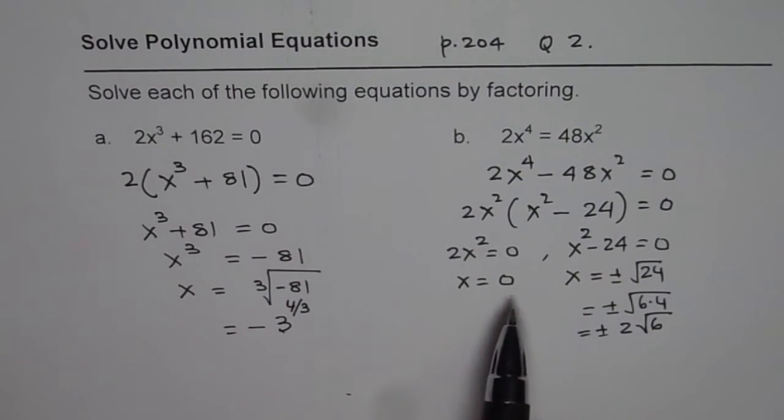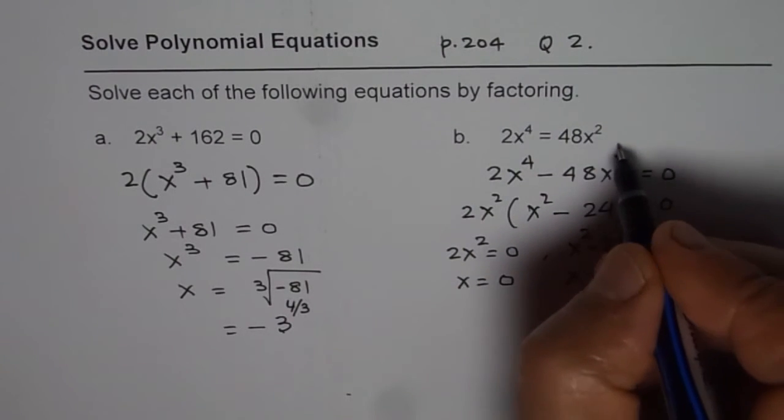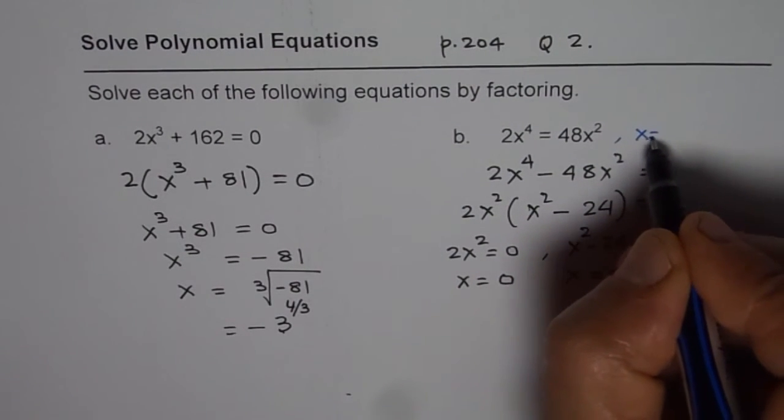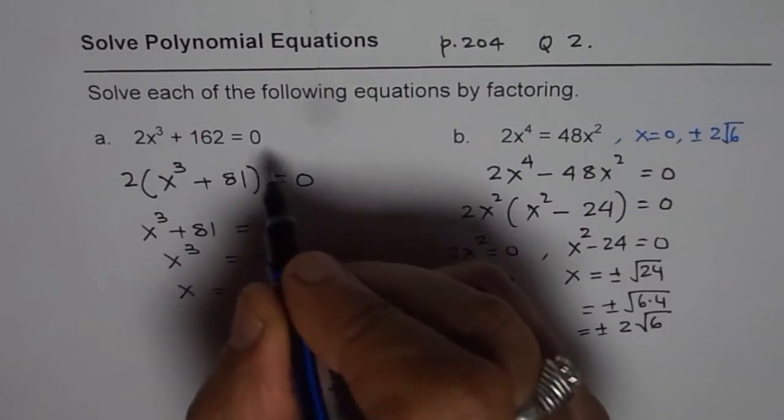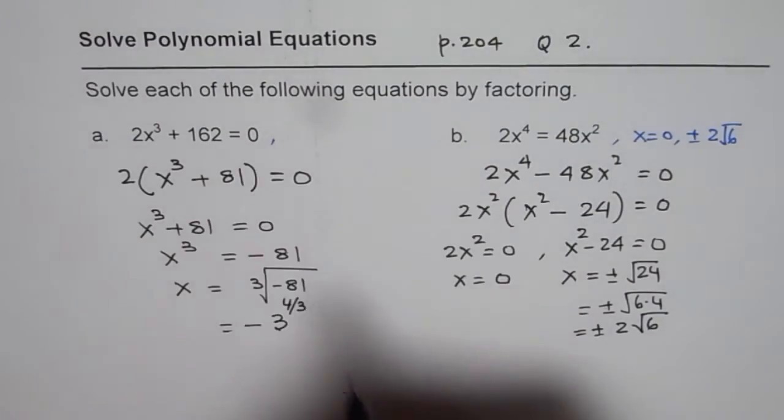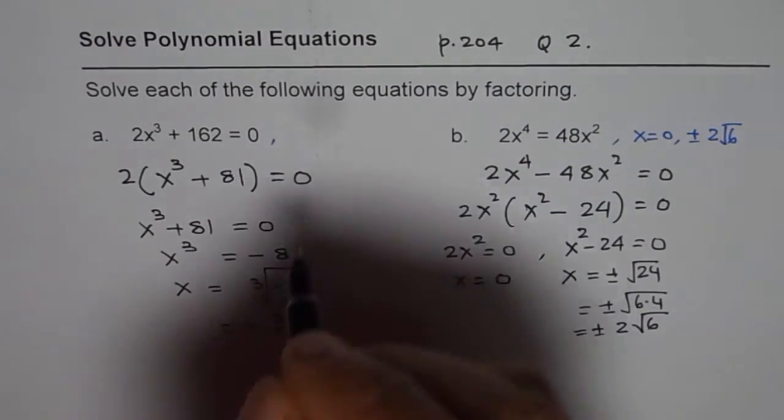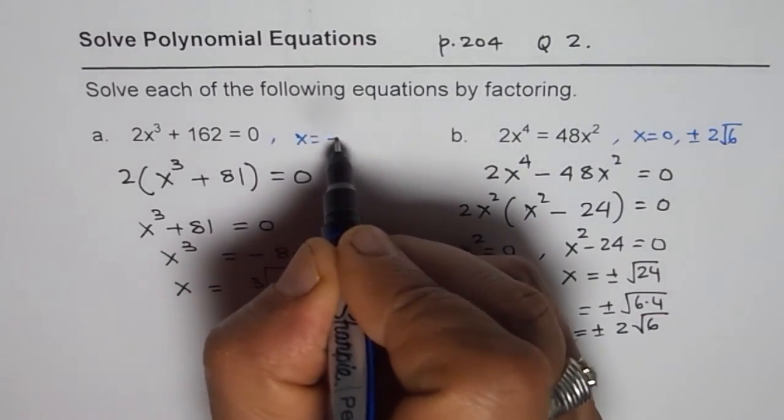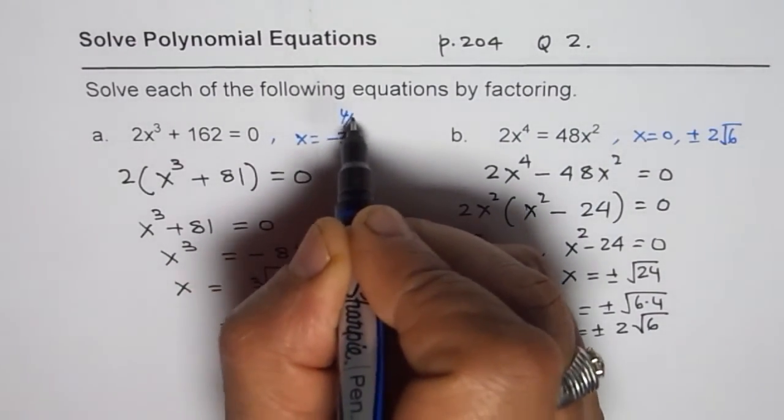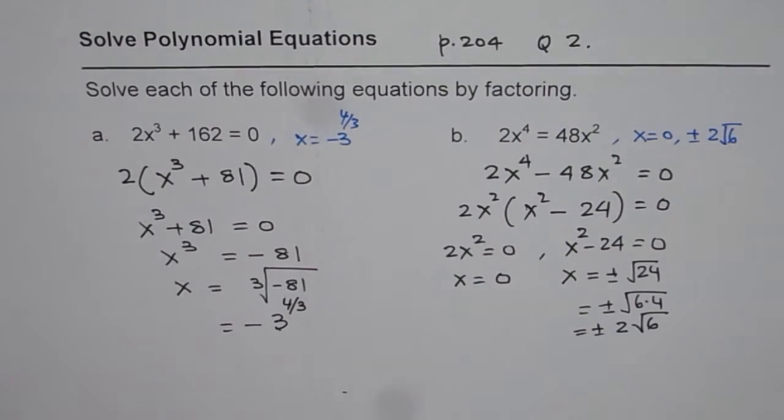So in this case we get three solutions: x = 0 and ±2√6. In the first case, we got solution as x = -3^(4/3). So that is how you can solve them. I hope that helps. Thank you.